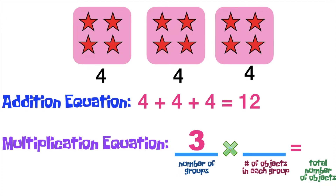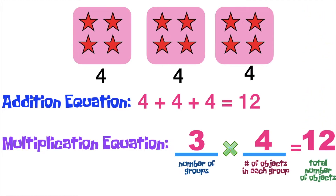So, that means our second factor is four. And lastly, to find the answer, we need to find the total number of stars. How many stars do you see? Fantastic! It's twelve. So, three times four is equal to twelve.